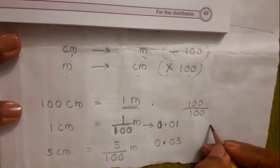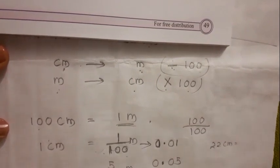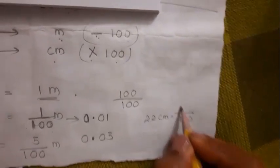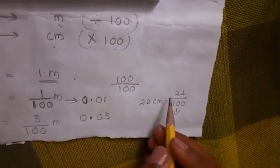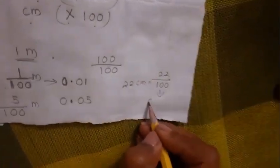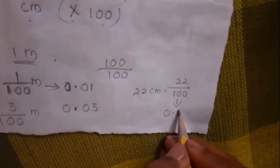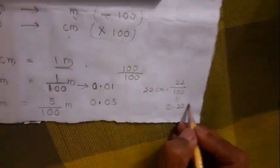Another example: if you take 22 centimeters, then you write 22 out of 100. There are two zeros but no whole numbers. You write 0 and keep a decimal point to separate, then 2 and 2 — giving 0.22 meters. Is it clear?